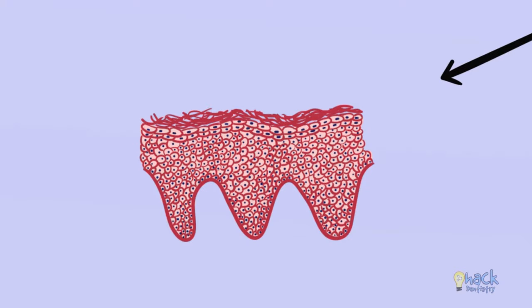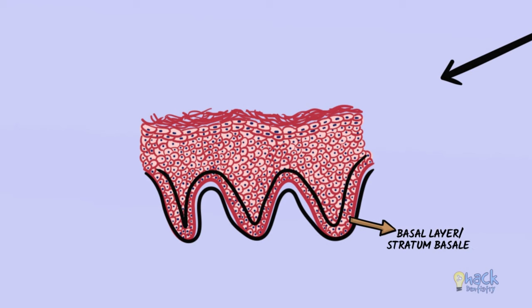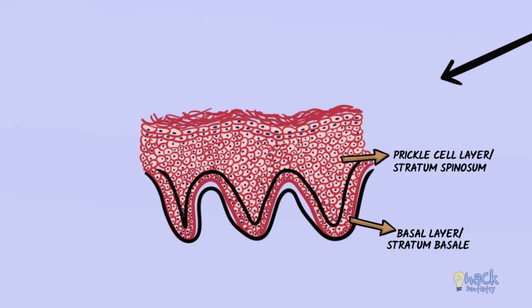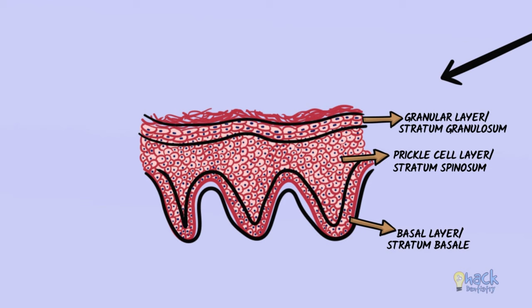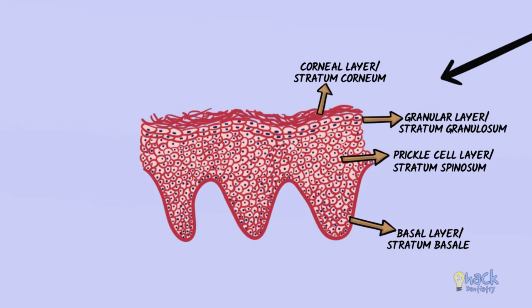It consists of four layers or strata: namely the basal layer or stratum basale, the prickle cell layer or stratum spinosum, the granular layer or stratum granulosum, and the corneal or keratinized layer otherwise called stratum corneum.